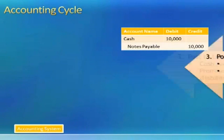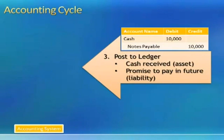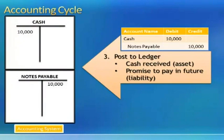The third step in the accounting cycle is to post to the ledger. Recall that the journal is a chronological listing of all transactions, and the ledger puts all the transactions affecting a particular account together. So the transaction of borrowing $10,000 from the bank would be posted to the ledger by debiting the cash ledger and crediting the notes payable ledger. Step number three in the accounting cycle is to post to the ledger.